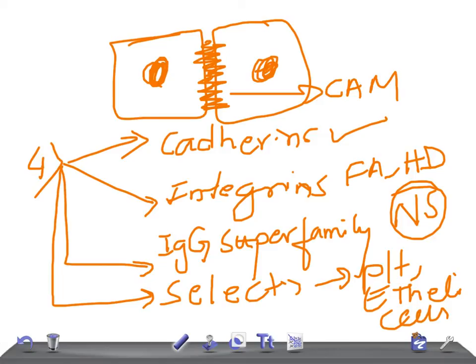So these are the important cell adhesion molecules. In USMLE Step 1, they can ask you which of the following is a cell adhesion molecule, and which of the following is present in the nervous system, or which of the following is present in the platelets and endothelial cells. Thank you so much for watching this video. I hope this brief video is helpful for your USMLE Step 1 examination, and even if you are a first-year medical student. Take care.